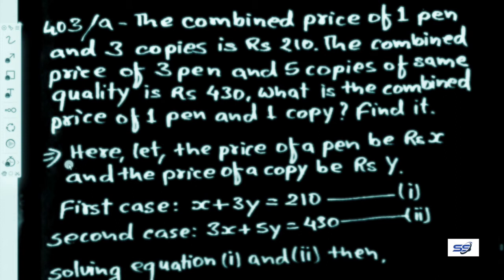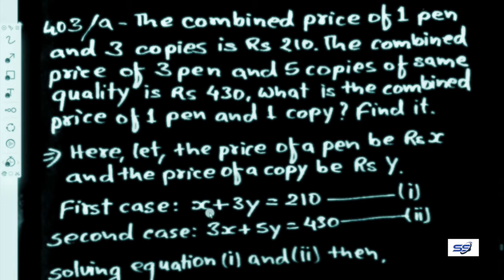This is a verbal equation-based question. To solve this, we have to make certain assumptions. Let the price of a pen be x and the price of a copy be y. Now, as per the first case, the price of one pen and three copies means x plus 3y equals 210. Let this be equation 1.